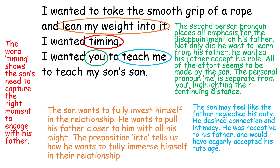Where it says 'teach me,' the son may feel like his father neglected his duty. It's not the job of the child to desperately ask to be taught. Normally, parents are the people who are constantly giving their tutelage, giving their learning to their sons or daughters. Here, his desperation to be taught shows a desire for connection and a desire for intimacy. He was really receptive to his father — he would have eagerly accepted his tutelage and was desperate for that connection. Tragically, he never got that teaching, that communication, that openness, and that seems to affect him in adulthood.